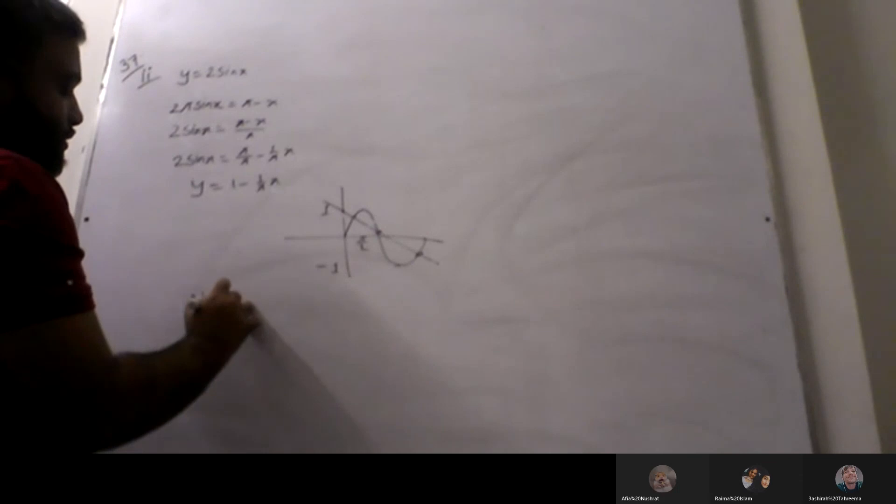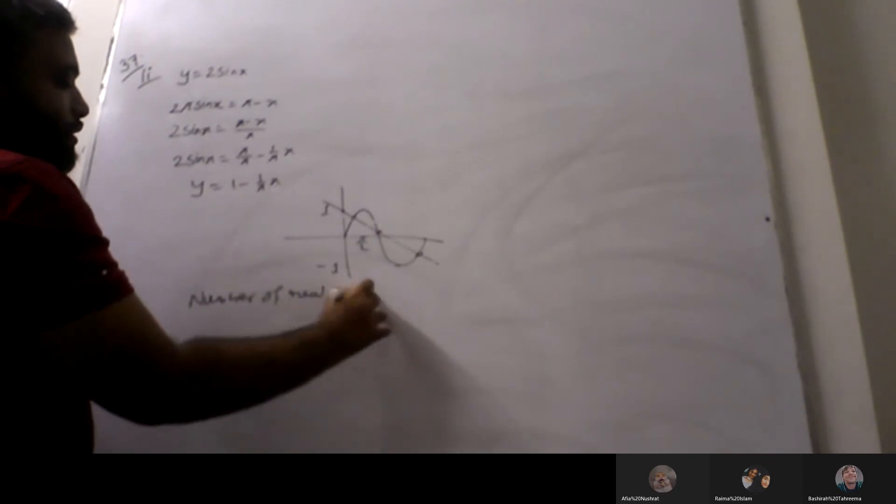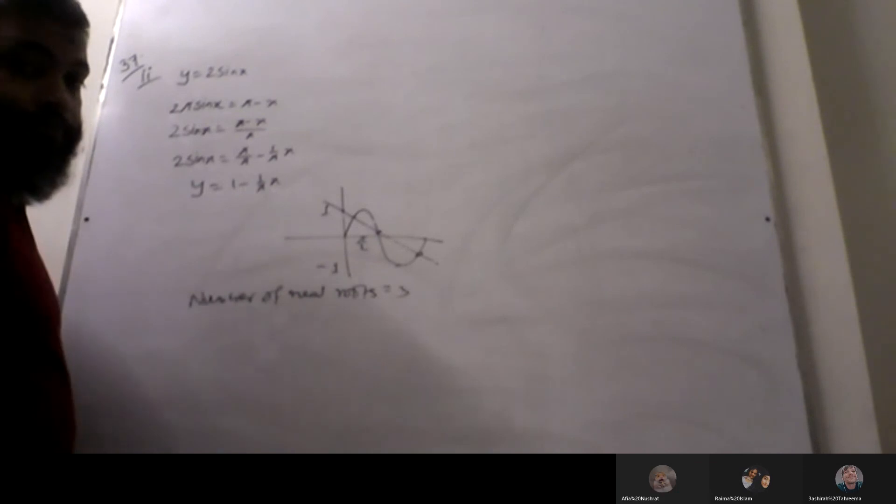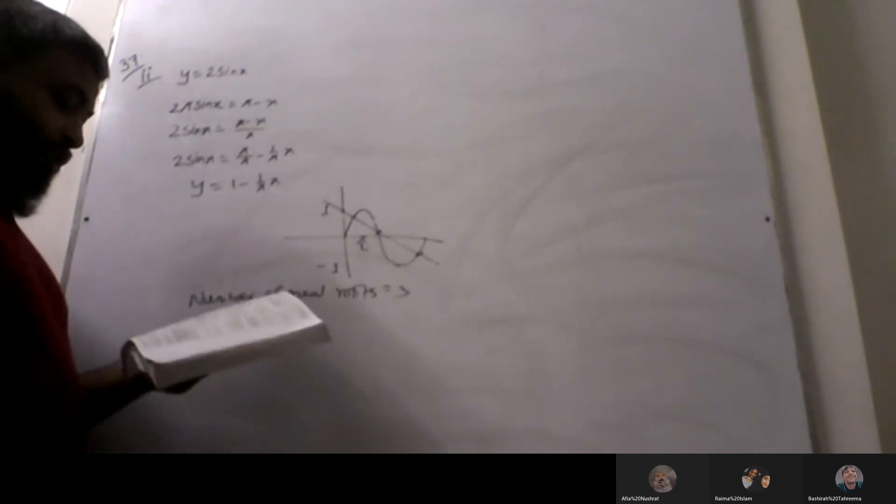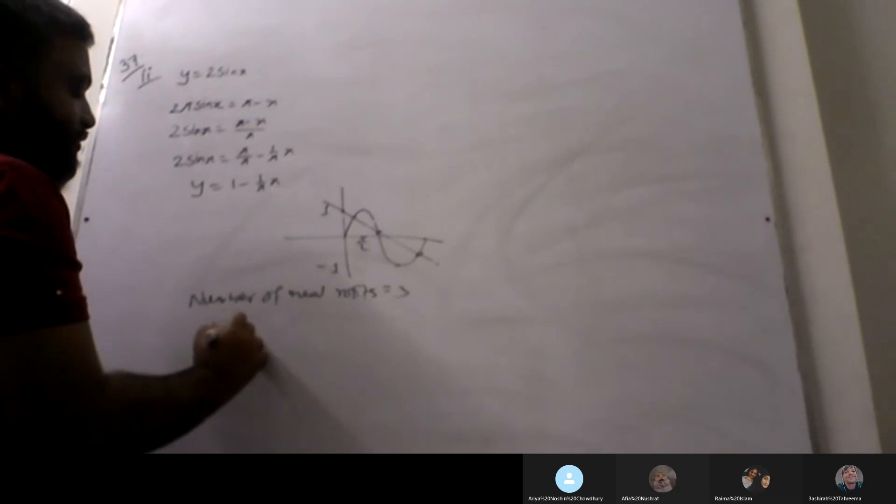So the number of real roots equals 3. Next question says state the equation of the straight line, the straight line equation: 1 minus 5 by x.